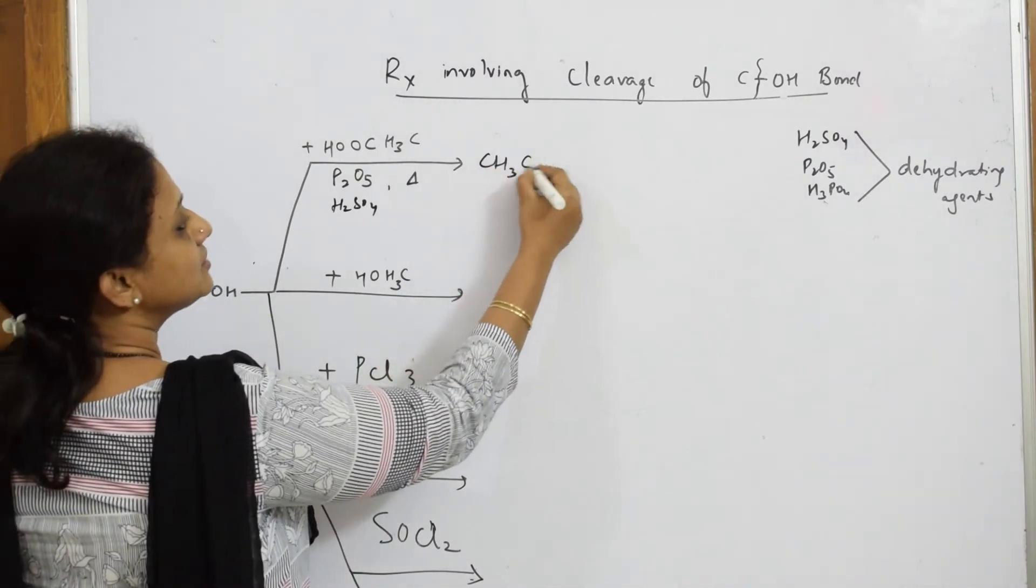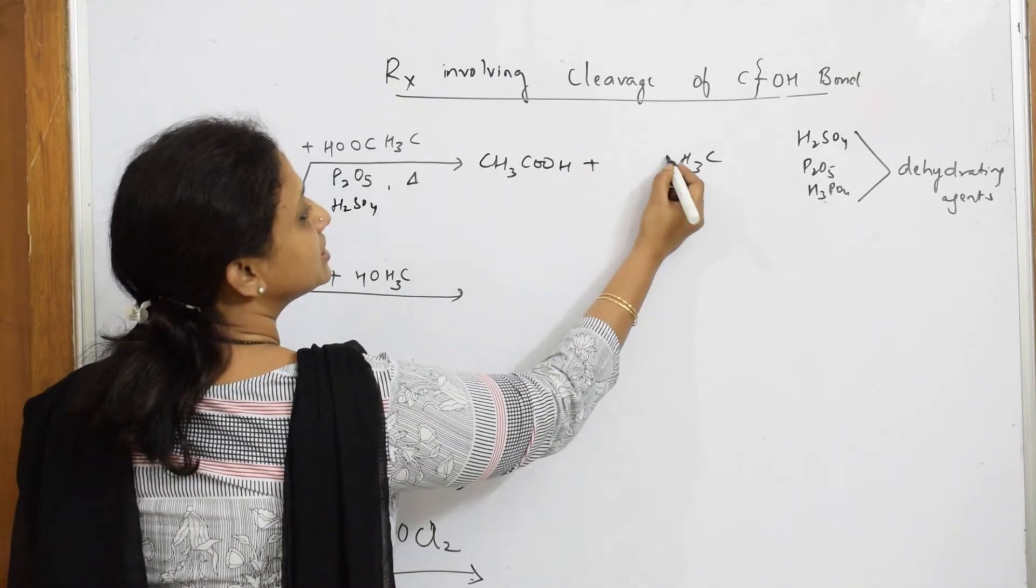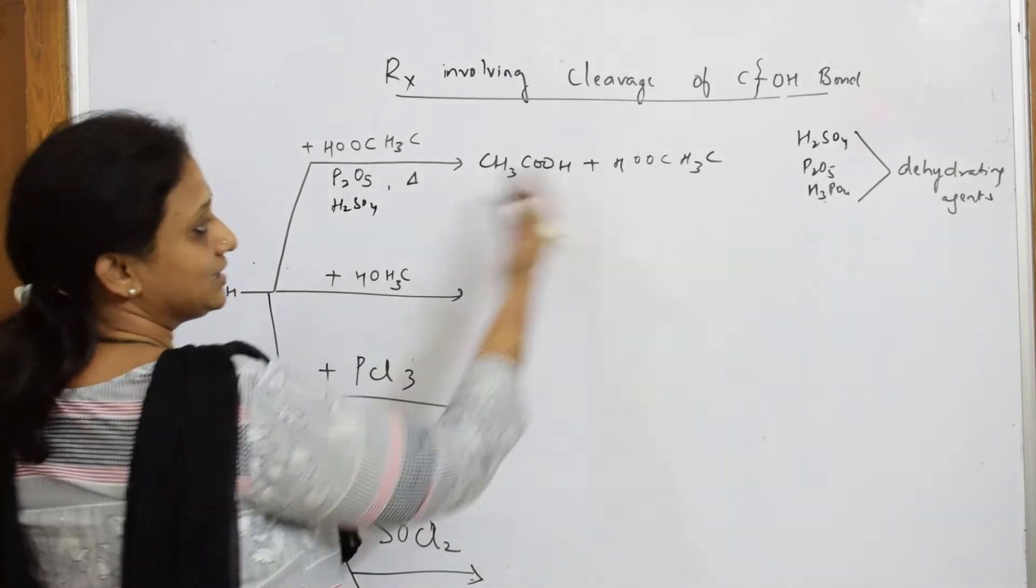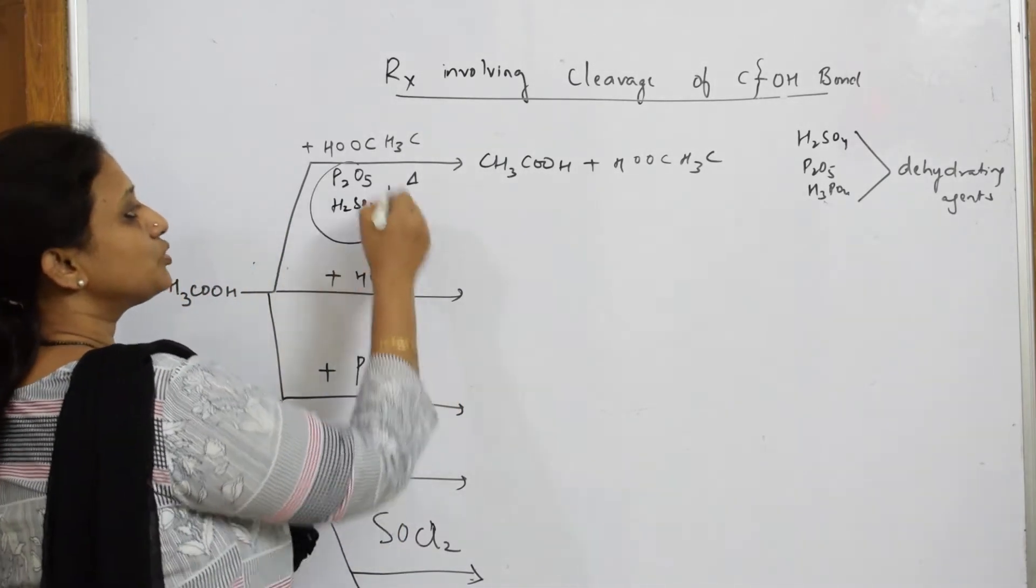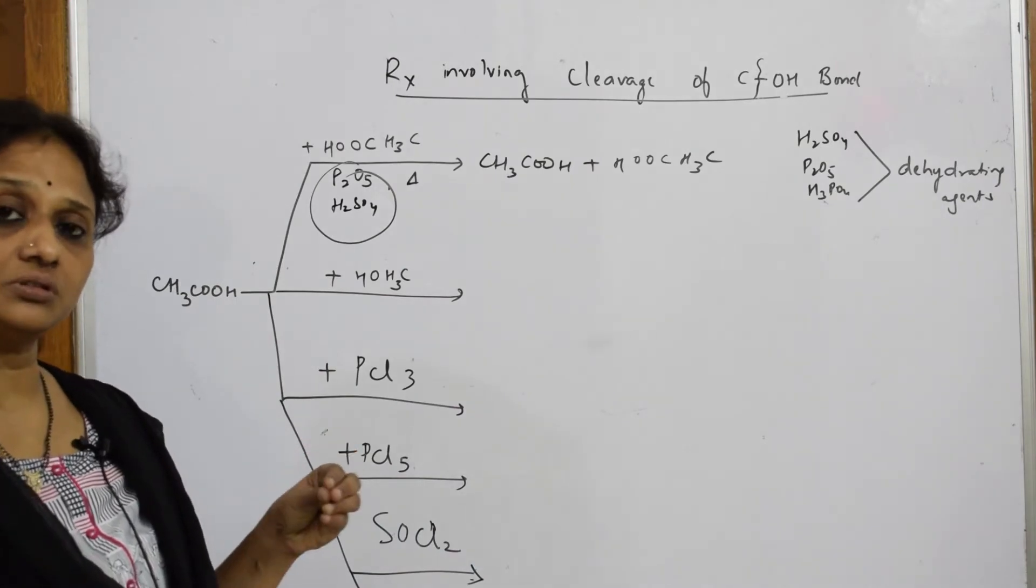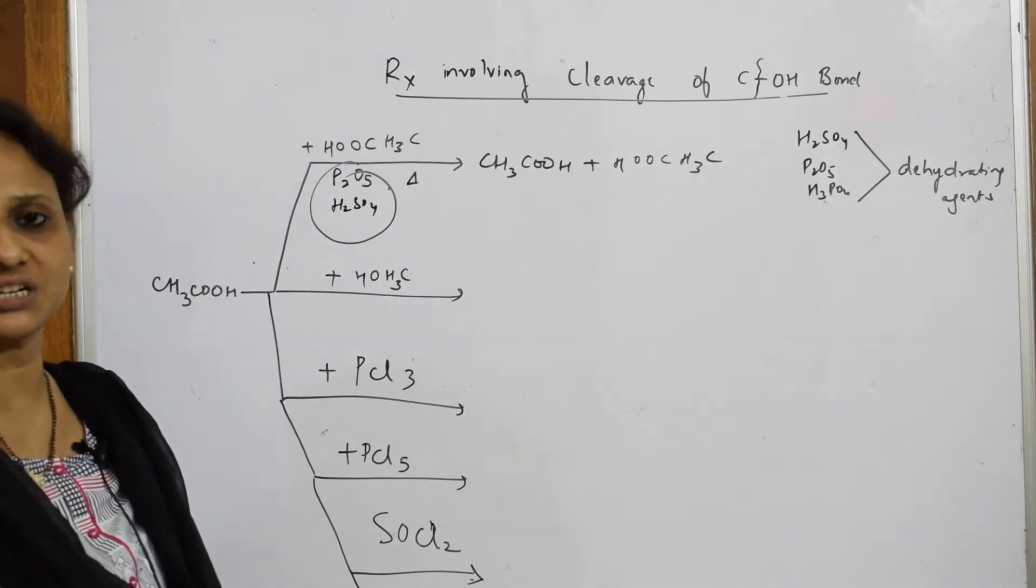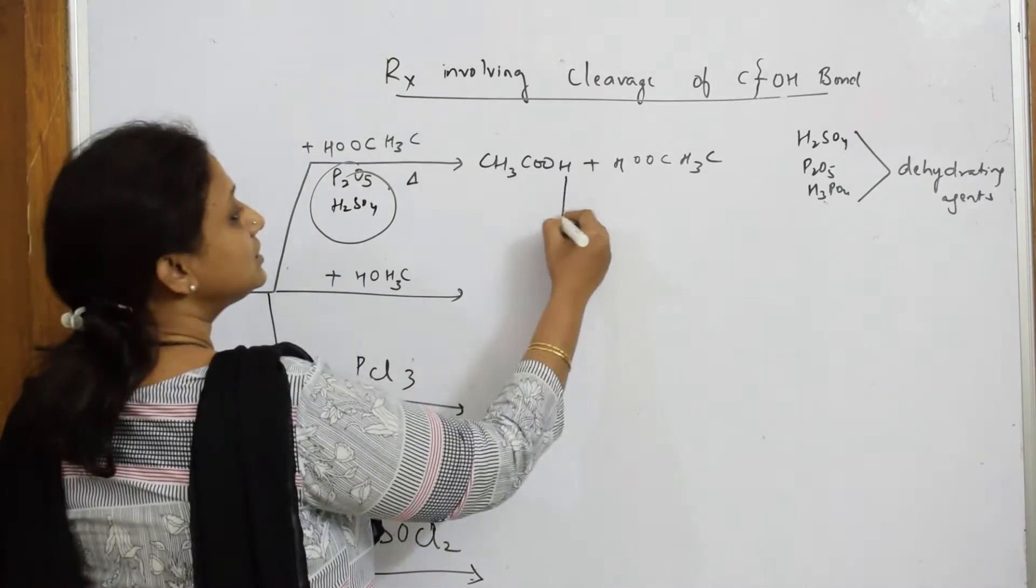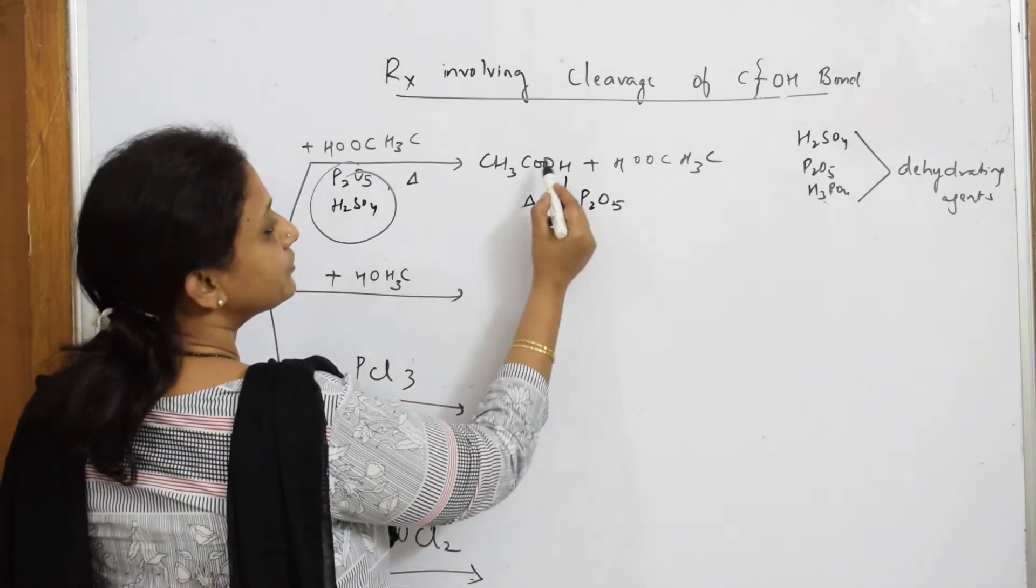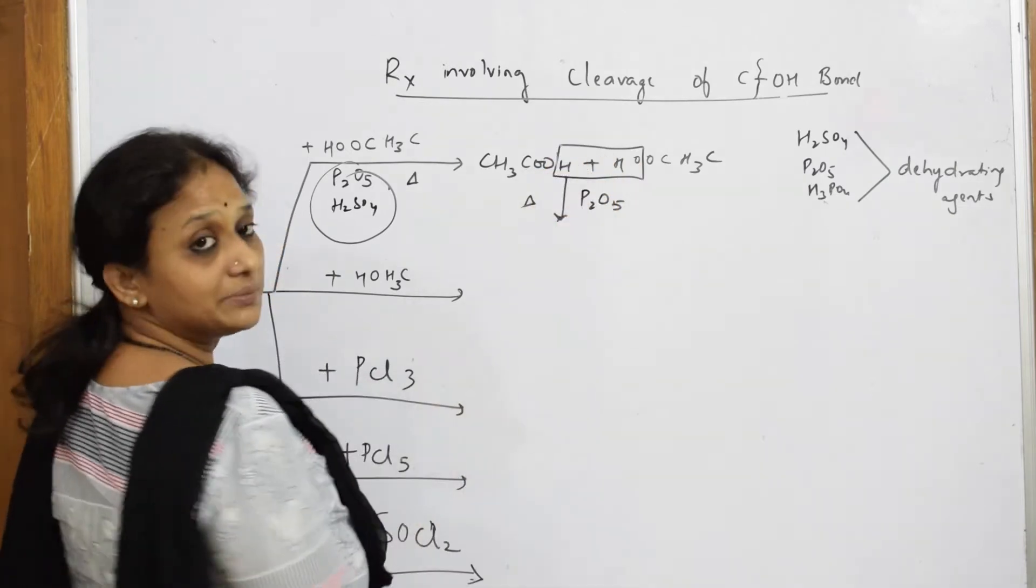You have your acetic acid. You are going to add one more molecule of acetic acid - one in this direction, another in the other direction. This is the most important in the exam. You have to remember the mode or the effect of that particular agent, then only you can start with your reaction. You have P2O5 and you are heating it.